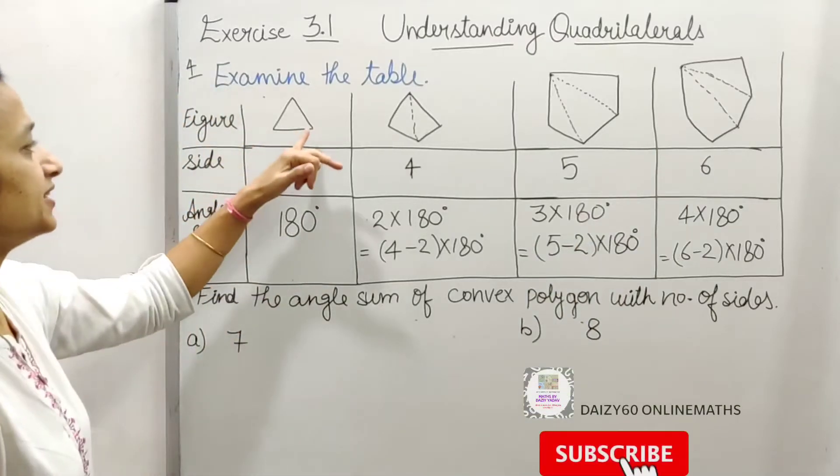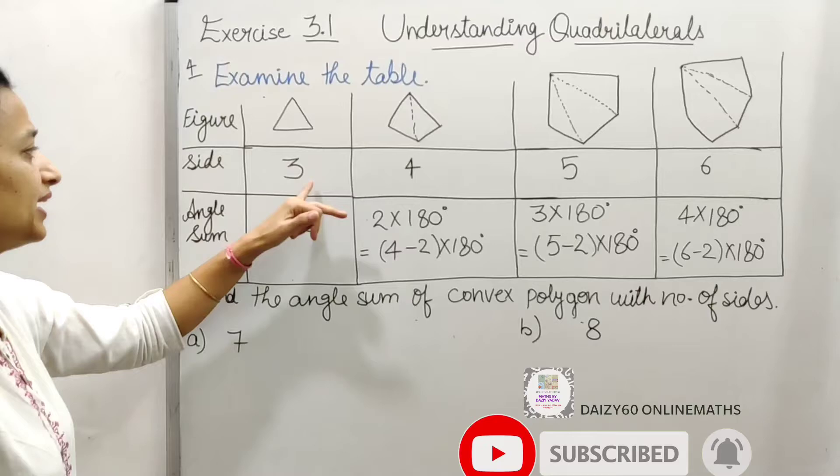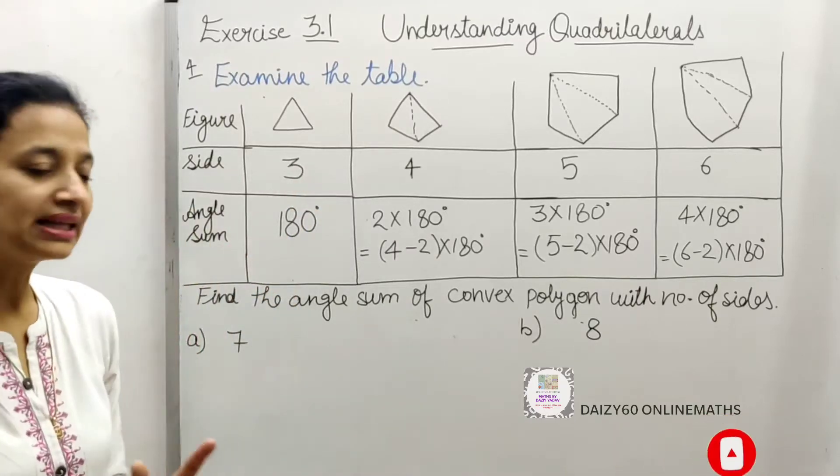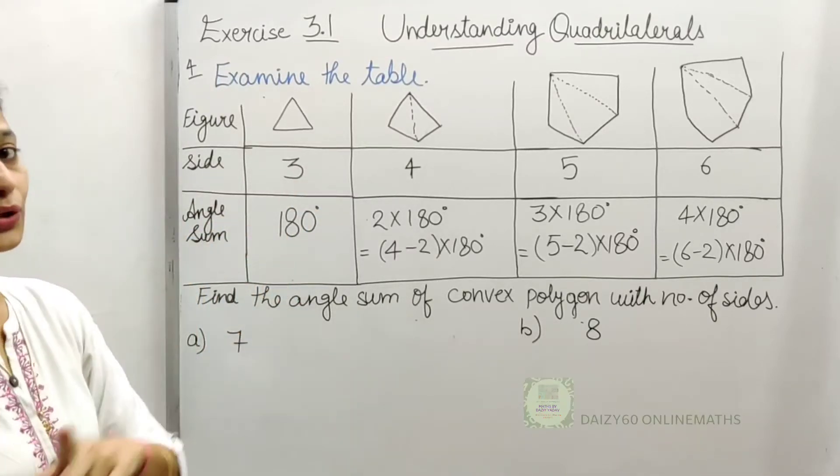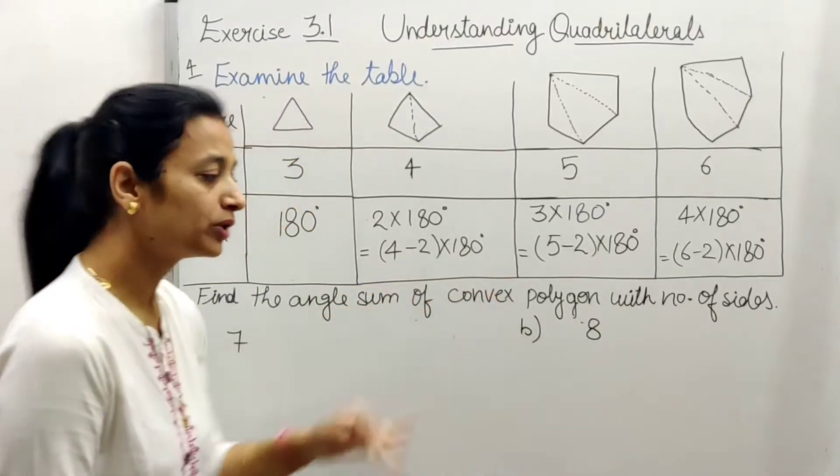Figure given is like the triangle we have given. How many sides of the triangle are? 3 sides. So, how many angles of the triangle is? 180 degree. Why? Because the formula is,